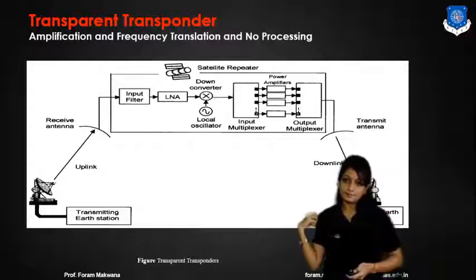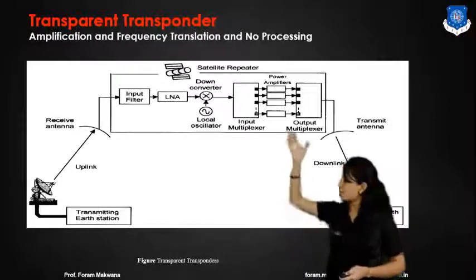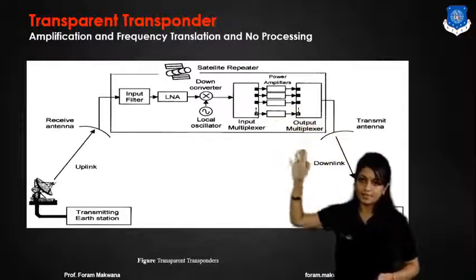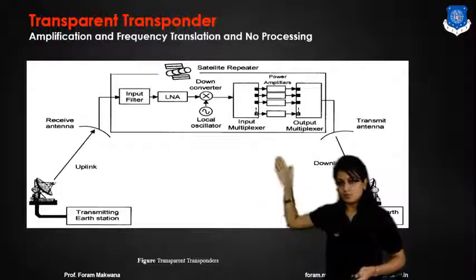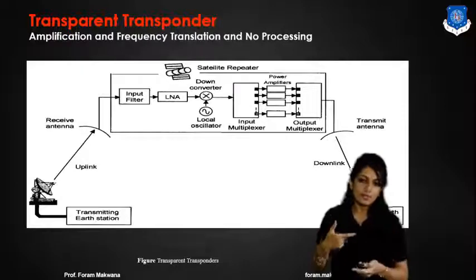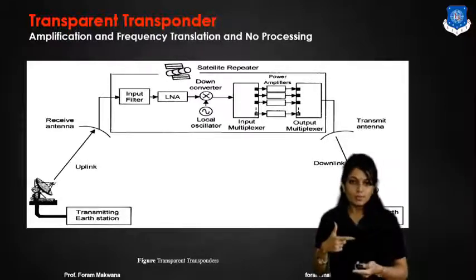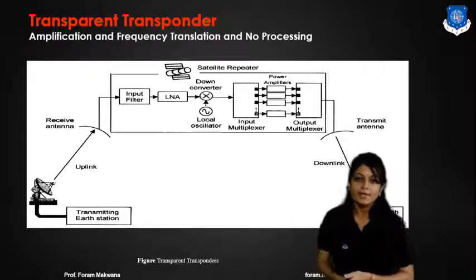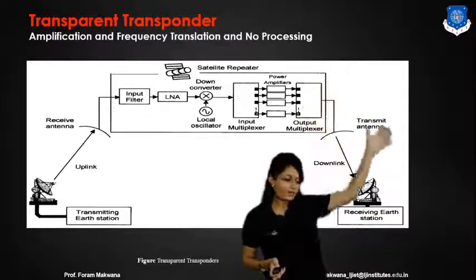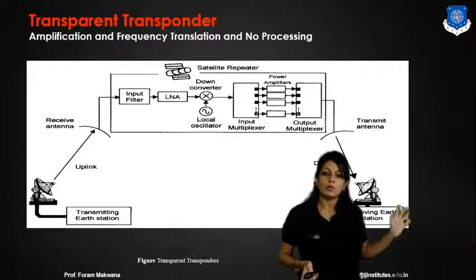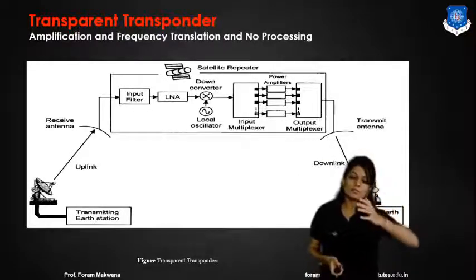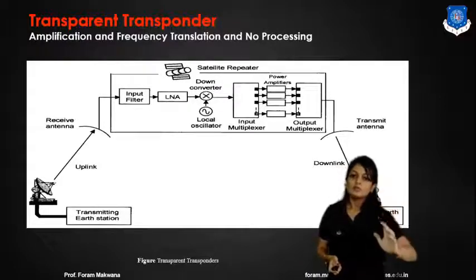Transparent transponder means that the amplification and frequency translation are done, but there is no processing of any signal. By the transmitting antenna, it transmits a signal to the satellite, and it passes through the band filters, low noise amplifier, frequency conversion, input multiplexer, and output multiplexer. That signal is then frequency-translated with the help of this transparent repeater and transmitted to the downlink ground station.